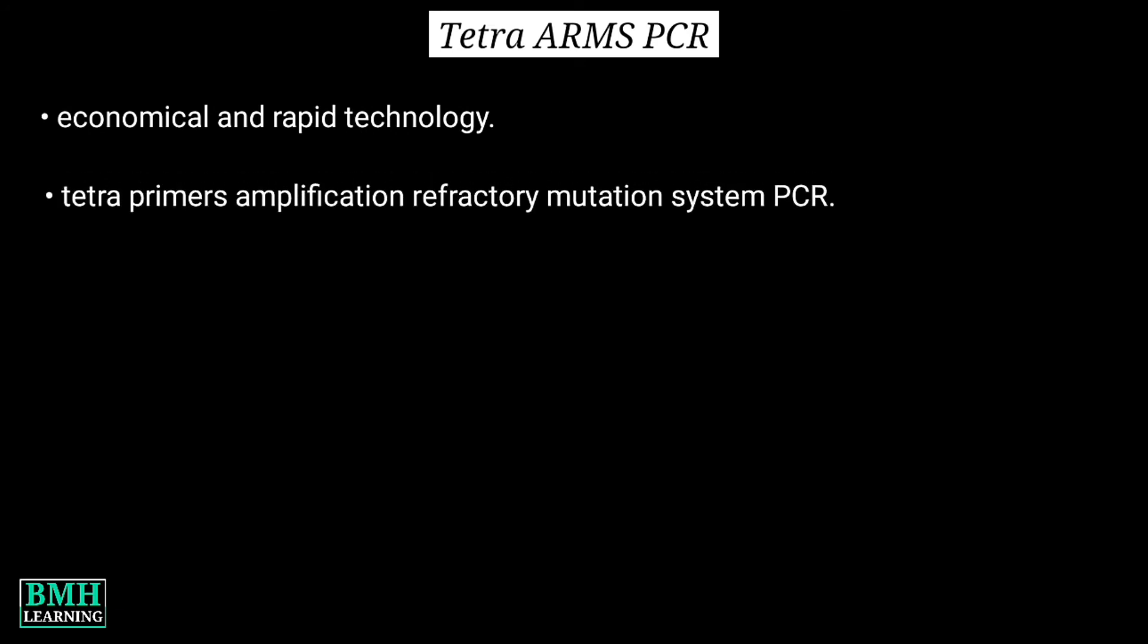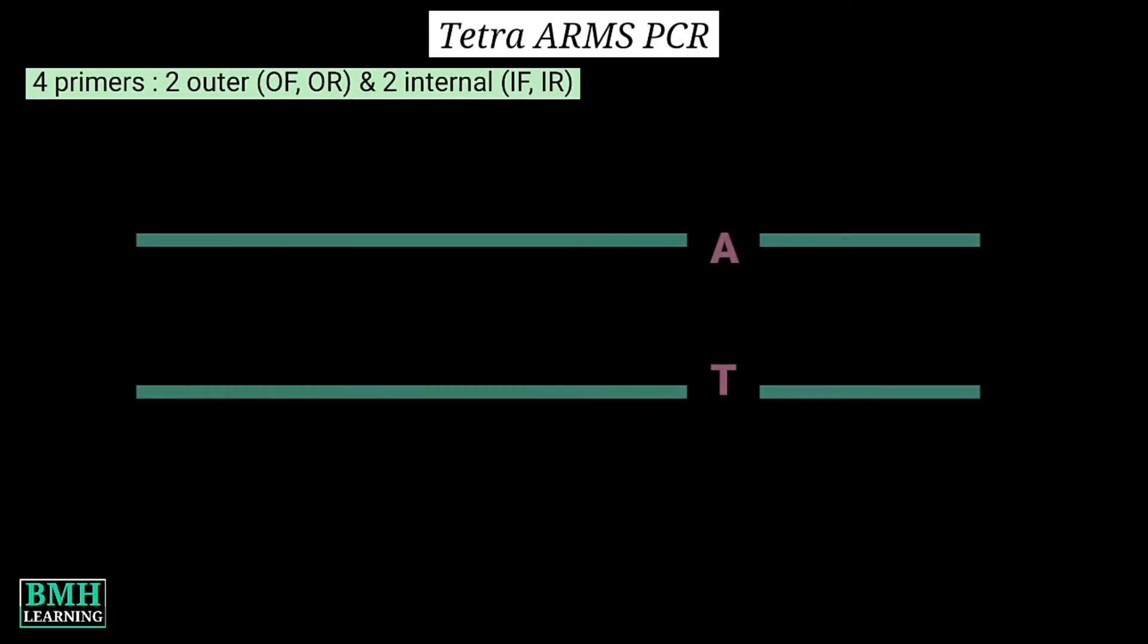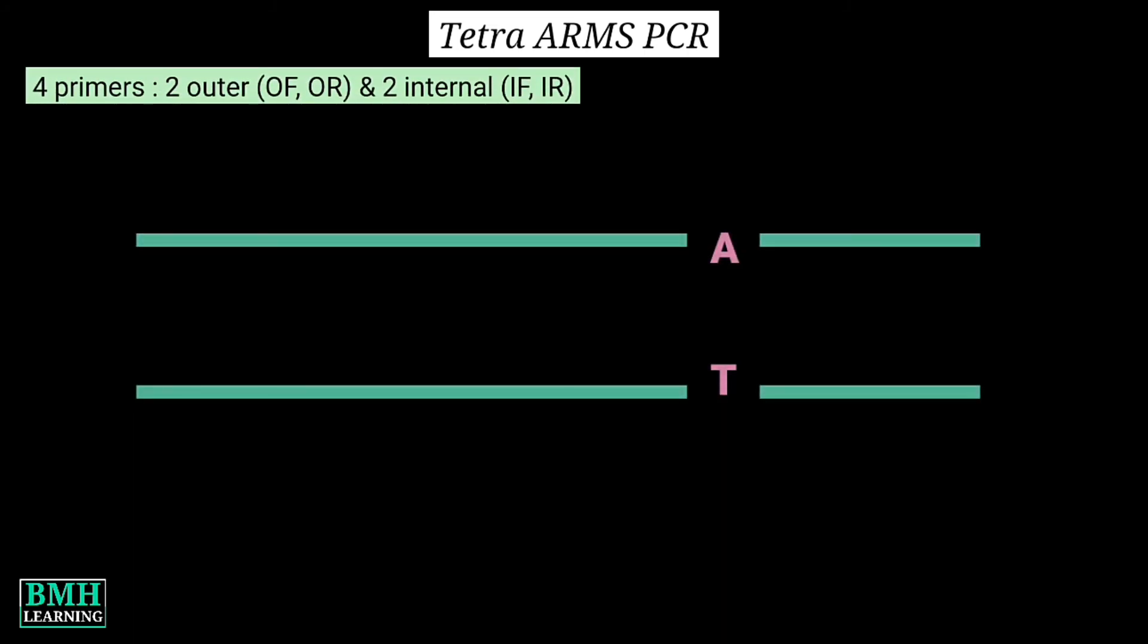The Tetra-Primer Amplification Refractory Mutation System PCR basically involves a single PCR step which is then followed by gel electrophoresis. As the name suggests, it uses four primers in a single run of PCR.